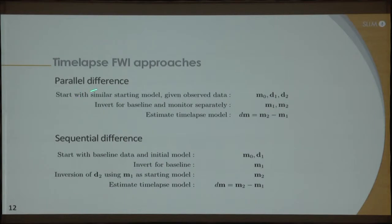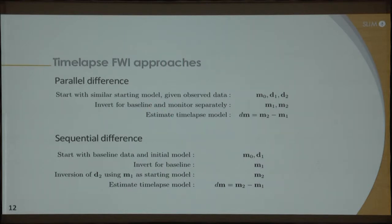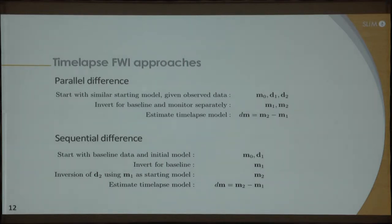There have been several approaches to dealing with this problem. A very common one is the parallel difference method: you use the same starting model for both the baseline and the monitor, invert for each separately to get M1 and M2, then subtract to get the time-lapse difference. Another approach is the sequential difference method: you start with the baseline data, invert for the baseline to get M1, then use that result as the starting model to invert for the monitor, getting M2, and subtract to get the difference. This is preferable when the two survey geometries are not exactly the same.